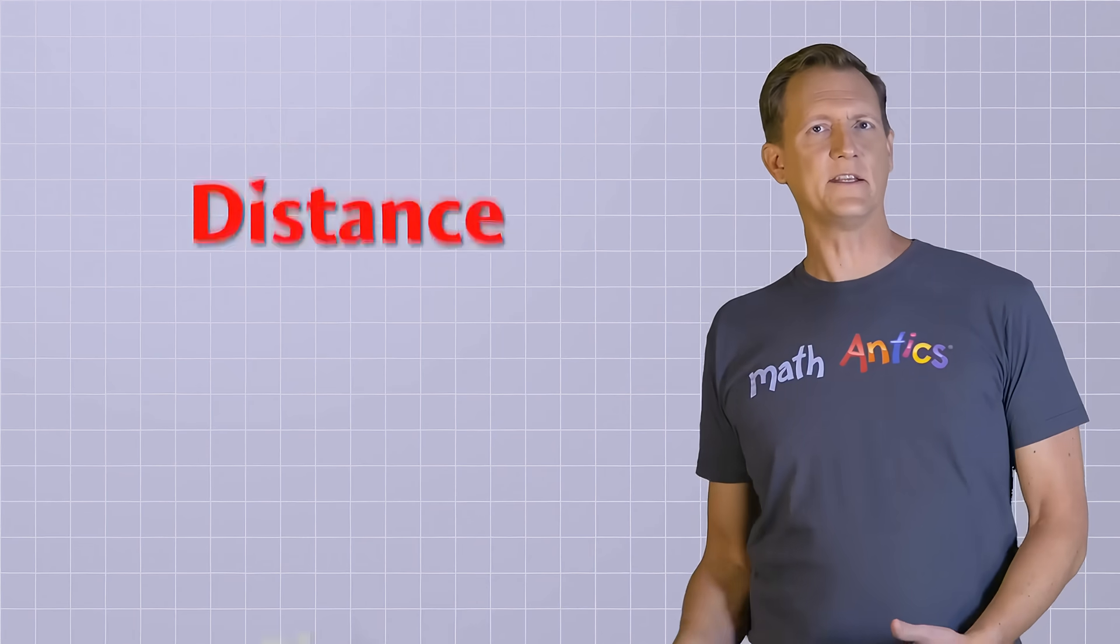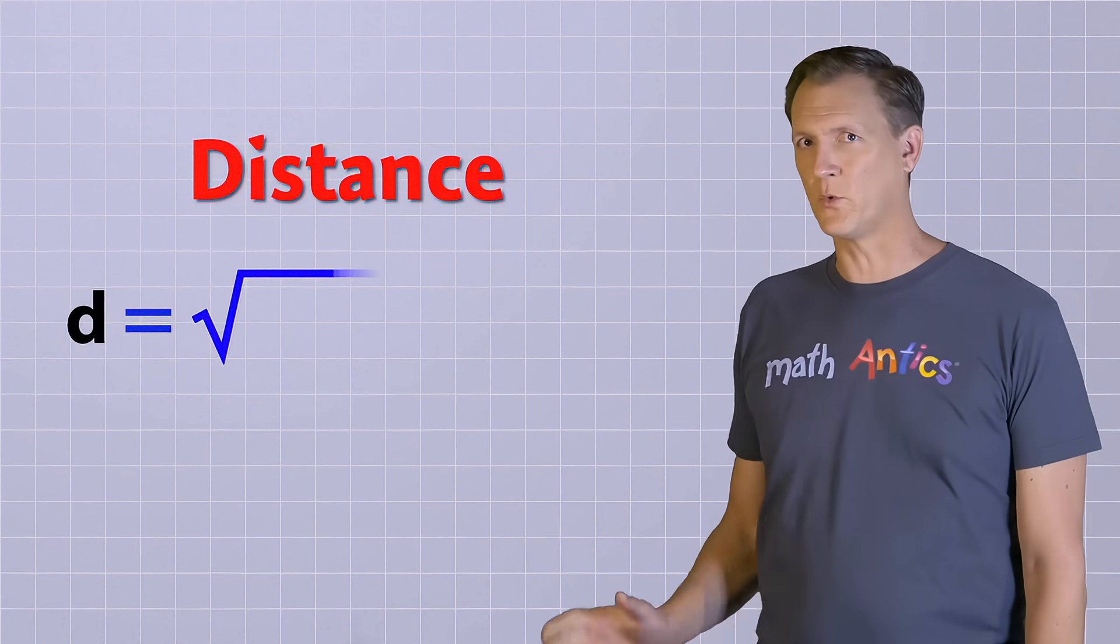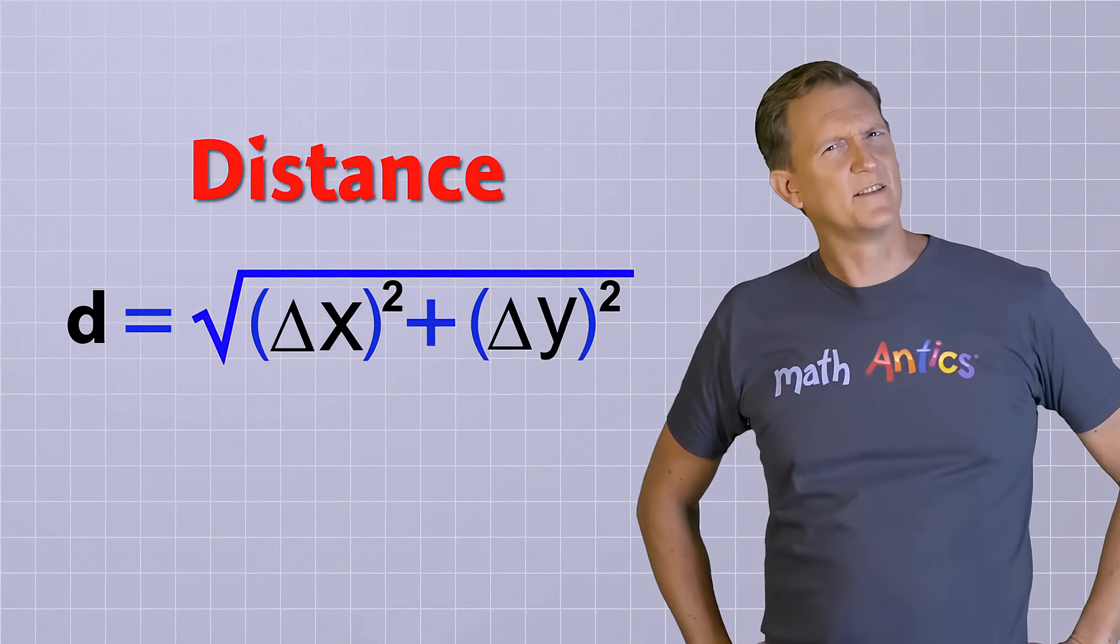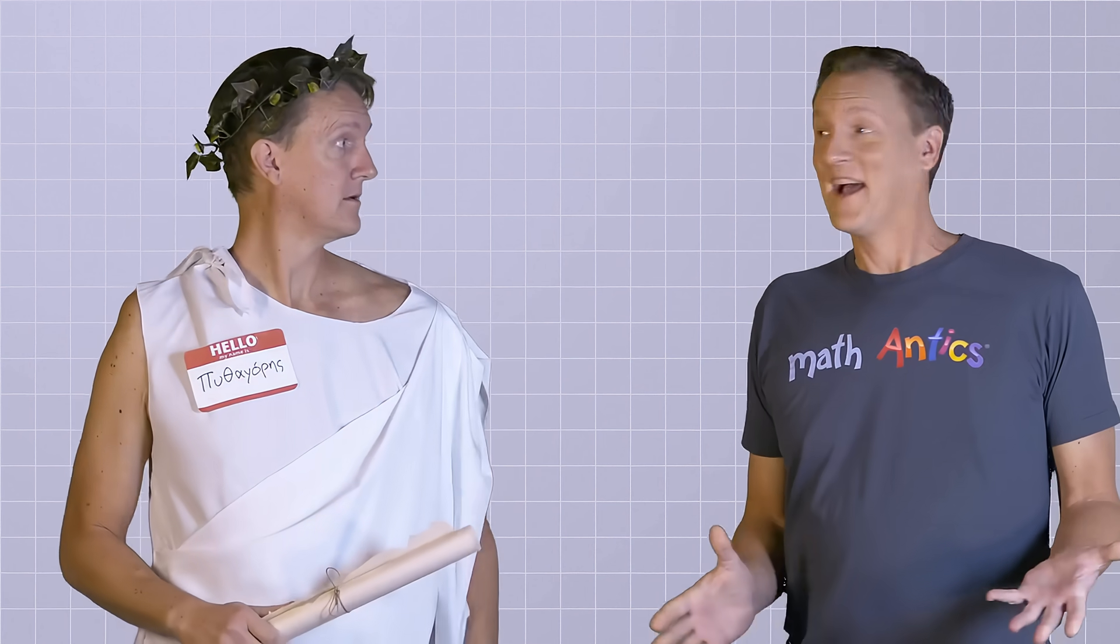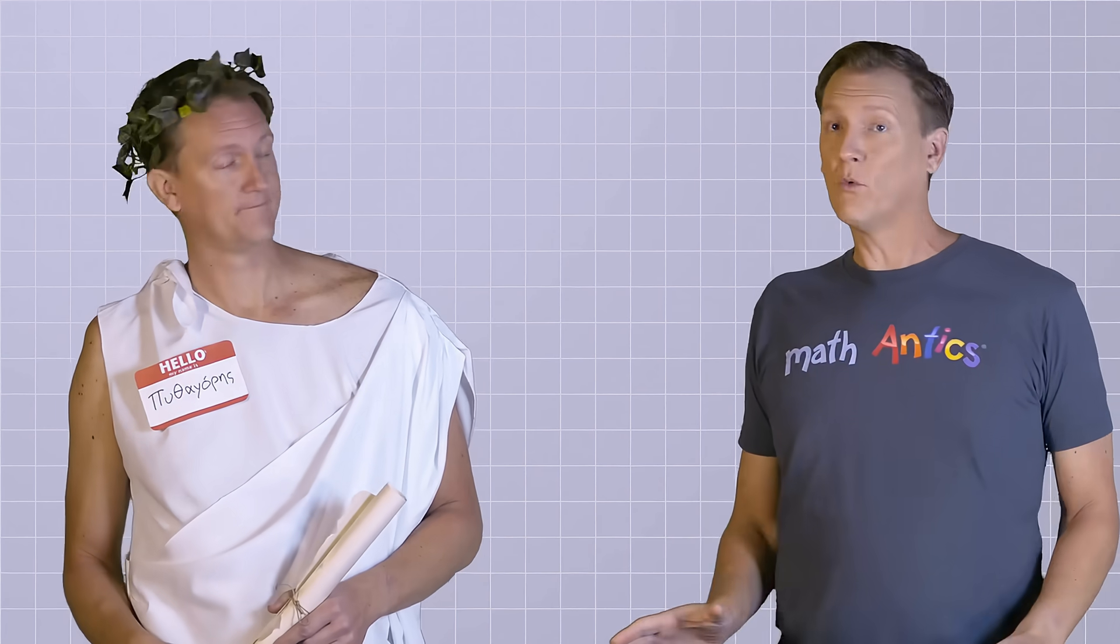Now that you've seen the equation for slope, let's see the equation for calculating the distance between two points on the line. Distance equals the square root of delta x squared plus delta y squared. Does this equation remind you of anything you may have seen before? It certainly reminds me of something I've seen before! You stole my theorem! Hi there, Pythagoras. I didn't steal your theorem. I'm just borrowing it so I can calculate some stuff. Don't worry, I'll give you credit for it. Oh well, I guess as long as you give me credit.